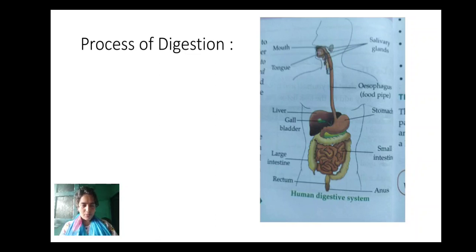Next, we have process of digestion. See, here we will see how digestion occurs in our body. Look at the figure. See, we have different organs like mouth, food pipe, stomach, small intestine, large intestine, rectum and anus. These are organs and these organs work together. They work in coordination and they form a system called human digestive system. See, now let's see how digestion occurs.